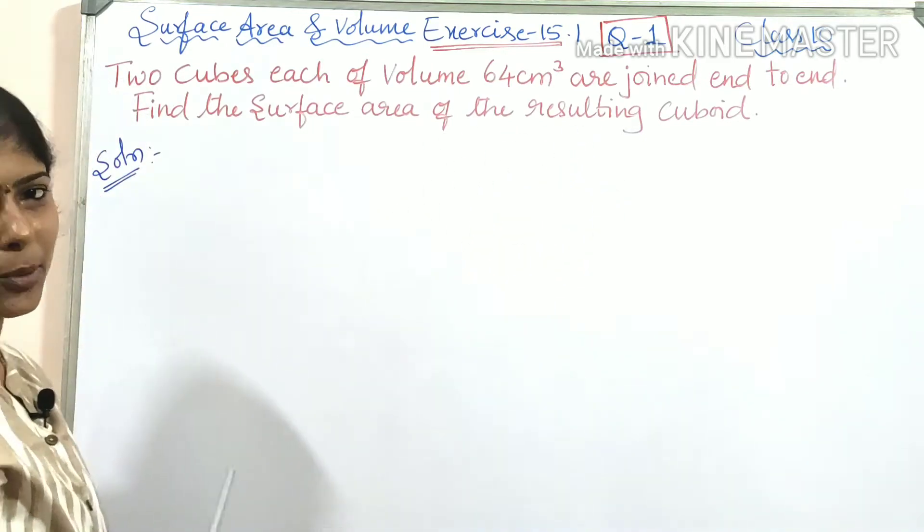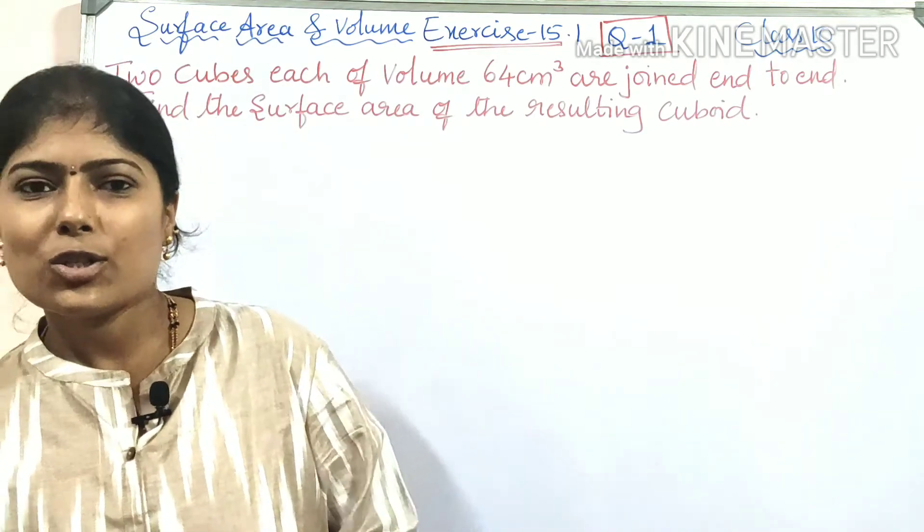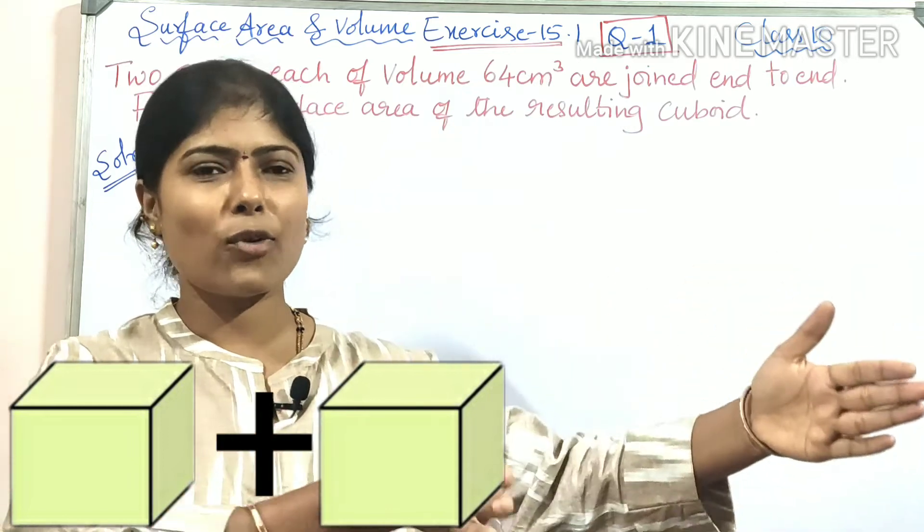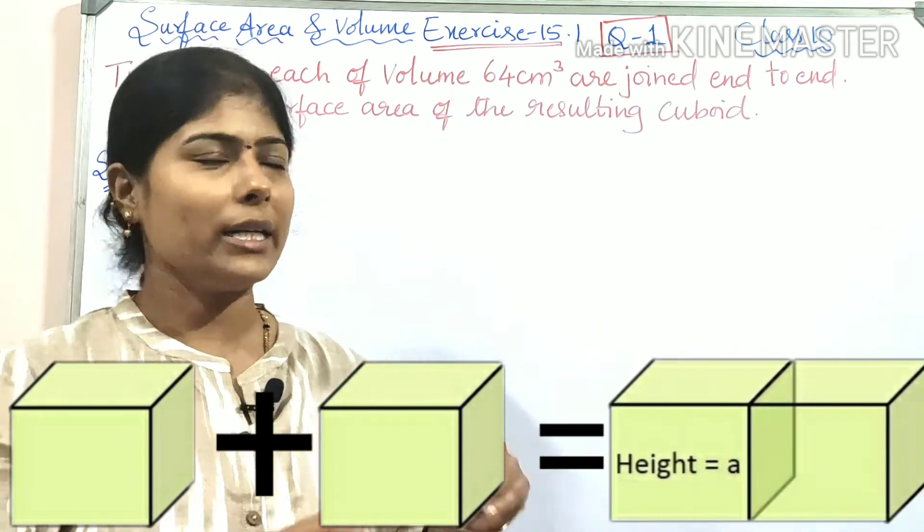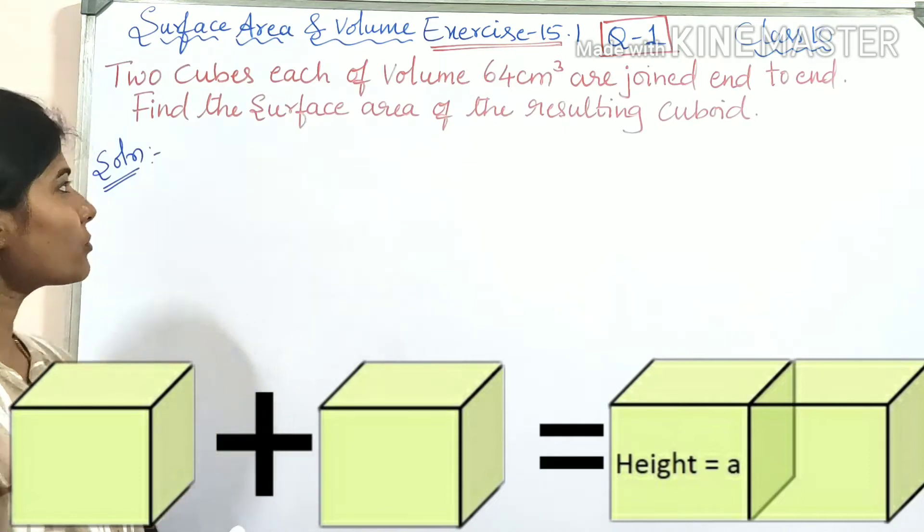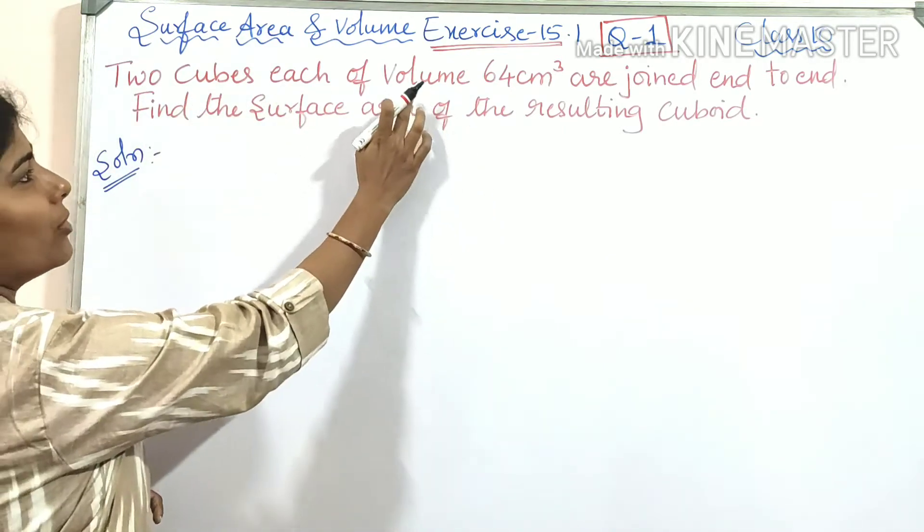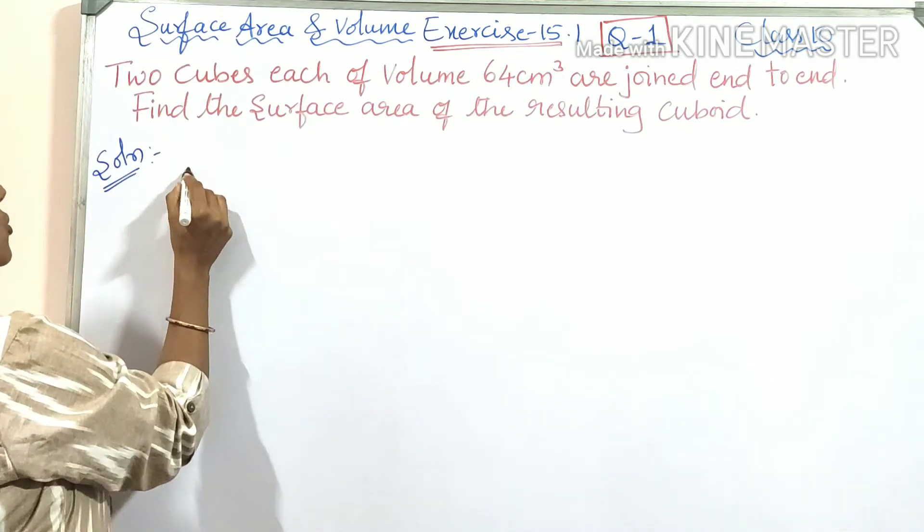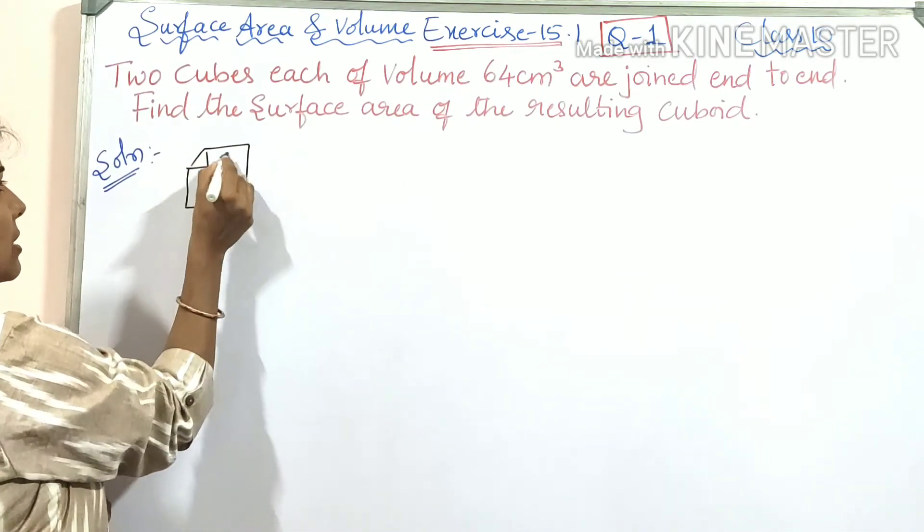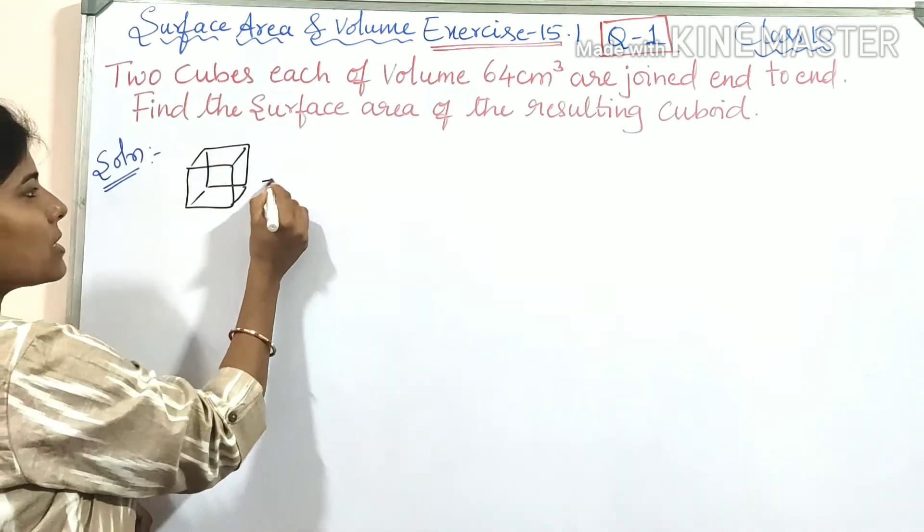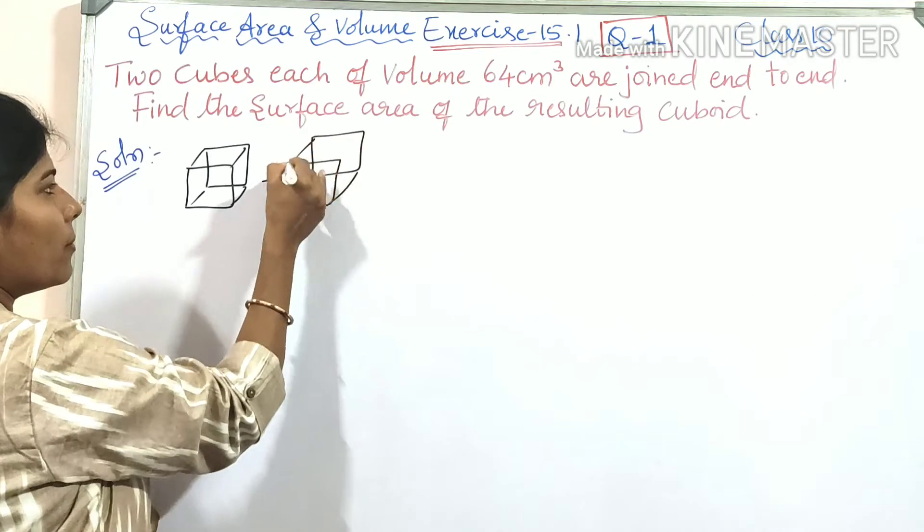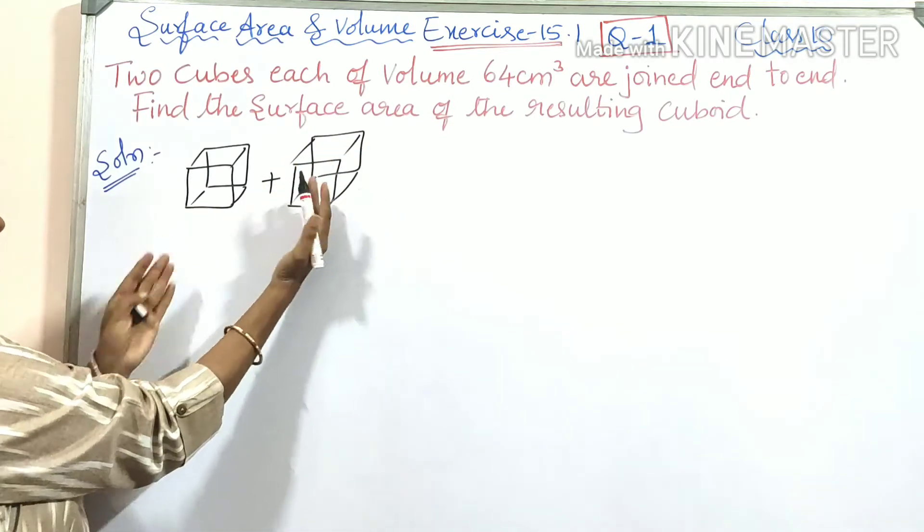Two cubes are joined end-to-end to form a resulting cuboid. Let us write the given information. Two cubes of volume 64, so two cubes are joined one to one, end-to-end.